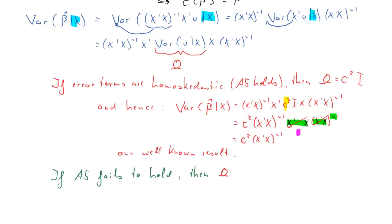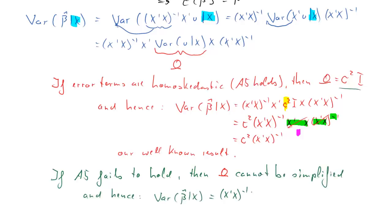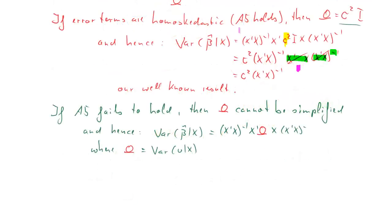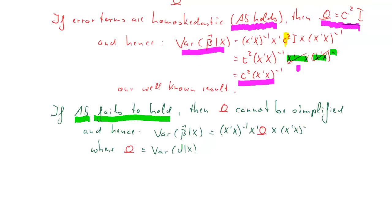If A5 fails to hold, then the variance-covariance matrix omega cannot be simplified, and the conditional variance of beta hat remains the more complicated formula and cannot be simplified. Recall that omega is just shorthand for the variance of u conditional on x. So: if A5 holds we get our well-known variance equation; if A5 fails, the conditional variance of beta hat is that longer, more complicated formula. Heteroscedasticity does make a difference.